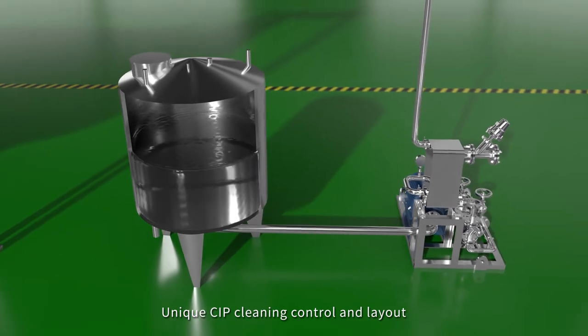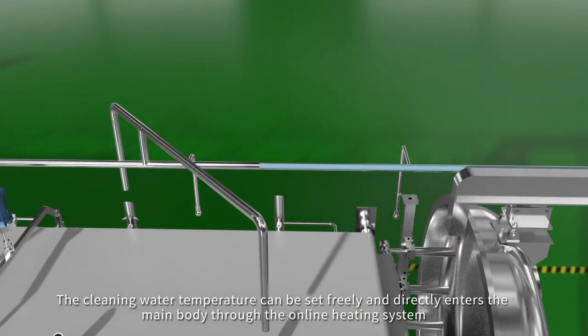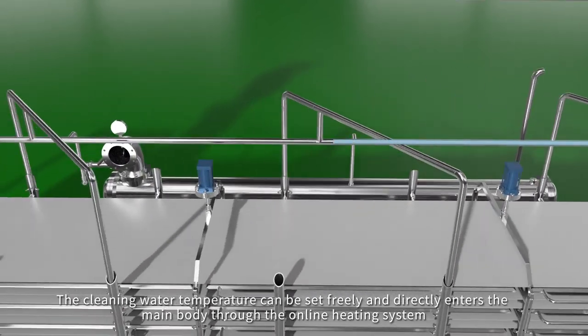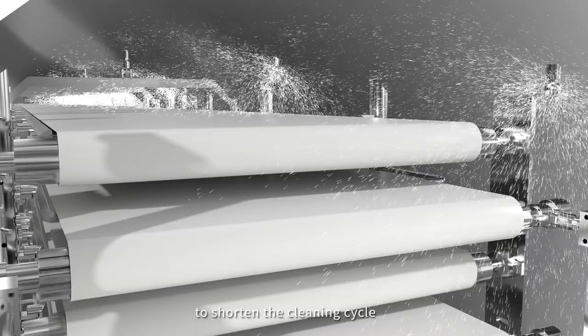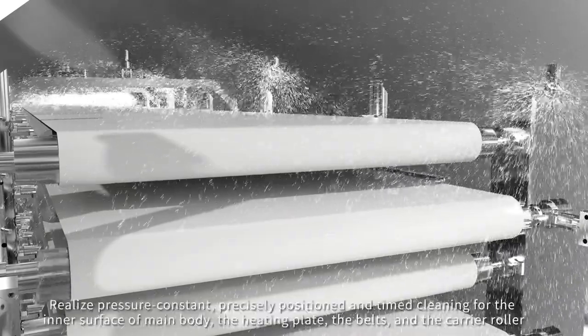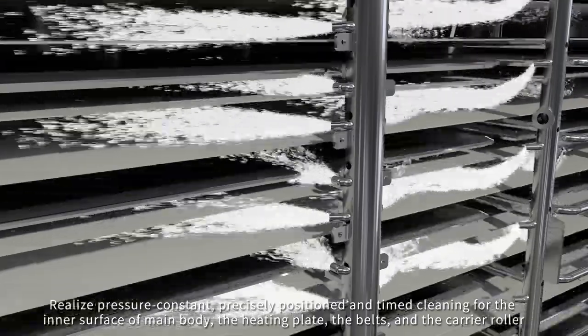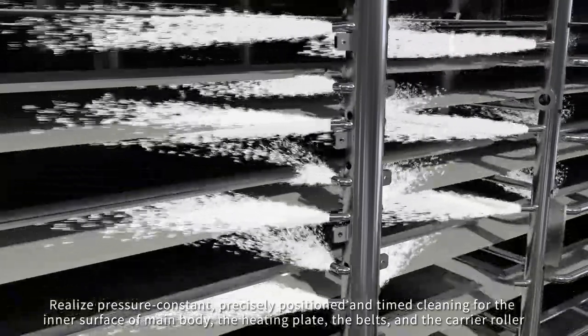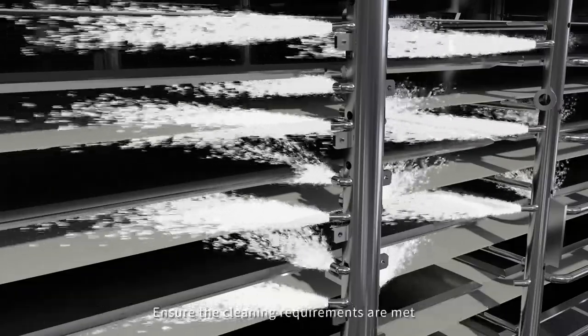Unique CIP cleaning control and layout. The cleaning water temperature can be set freely and directly enters the main body through the online heating system to shorten the cleaning cycle, realize pressure constant, precisely positioned, and timely cleaning for the inner surface of main body. The heating plate, the belts, and the carrier roller ensure the cleaning requirements are met.